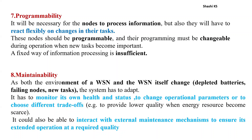The next characteristic is maintainability. A WSN environment or the WSN itself may change due to depleted batteries, node failures, or arrival of new tasks. The system must adopt all these changes. The WSN has to maintain itself — monitor its own health and status, change operational parameters when required, and choose between trade-offs. For example, when energy is scarce, it should be ready to provide lower quality, and interact with external maintenance mechanisms for extended operation.